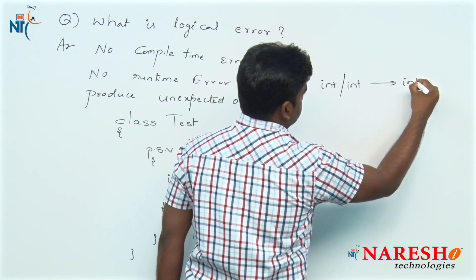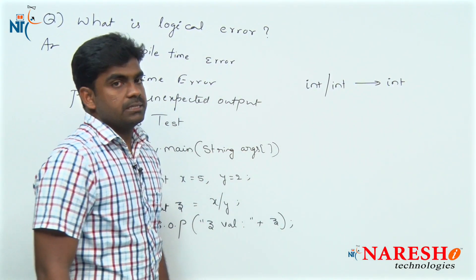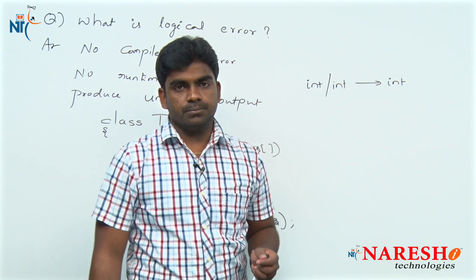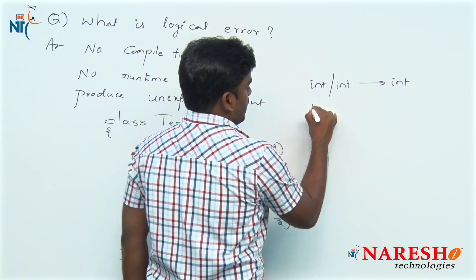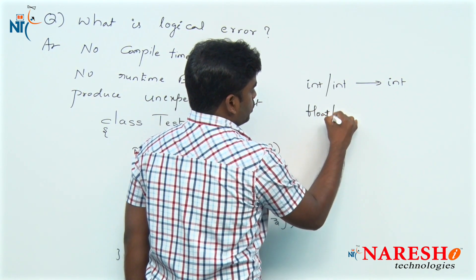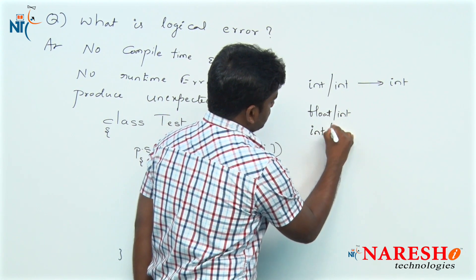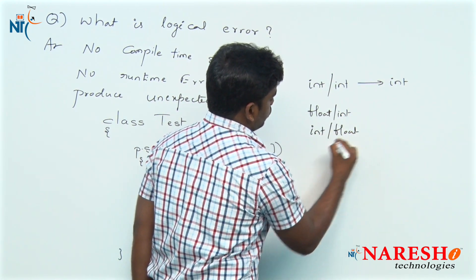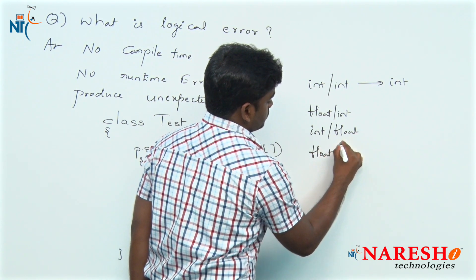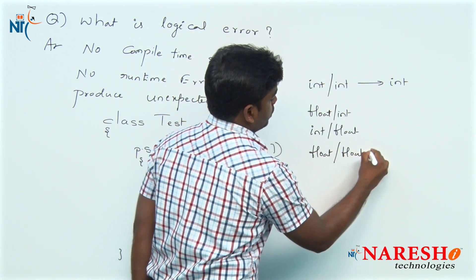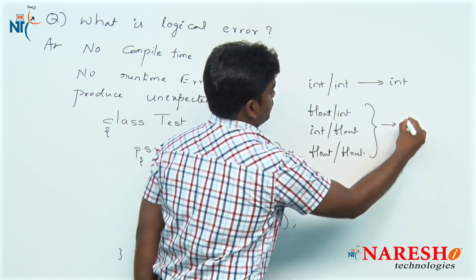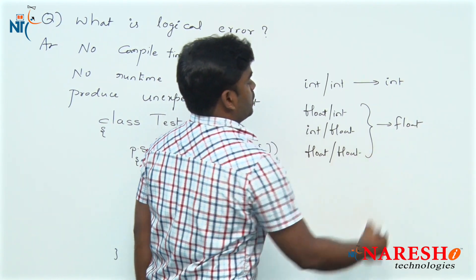But in all the remaining cases - if you divide a float with integer, or integer with a float, or float with a float - in all the remaining three situations we will get a float.